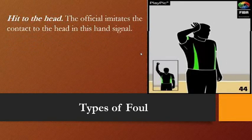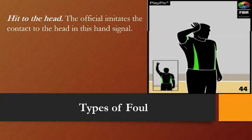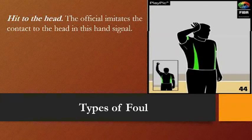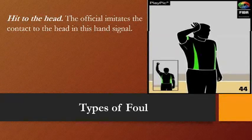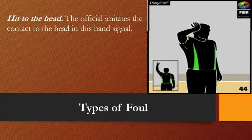Another type of foul is hit to the head. The official imitates the contact to the head in this hand signal. Sometimes in a fast break situation, if the player is rushing to defend and instead of blocking the ball hits the head of the opponent — whether unintentionally or intentionally — this foul is called.